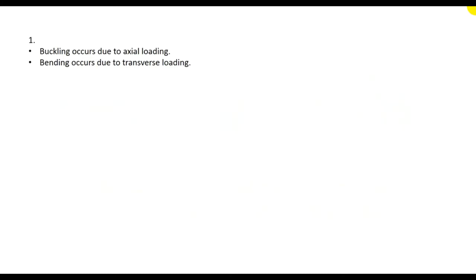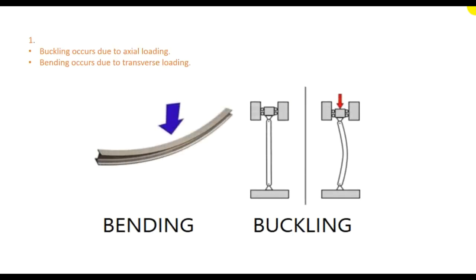First of all, let's discuss what is buckling. Buckling occurs due to axial load — when an axial load acts on a member, buckling occurs. Bending occurs due to transverse load. As you can see in the figure, where the load is acting transverse to the axis, it creates bending. But where the load is acting parallel to its axis, that is creating buckling.